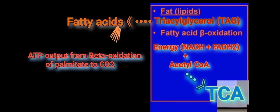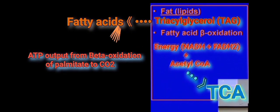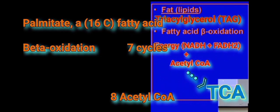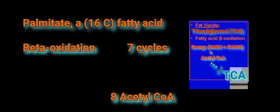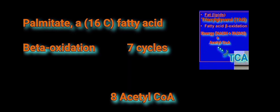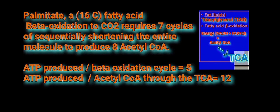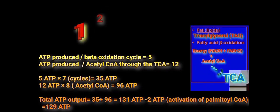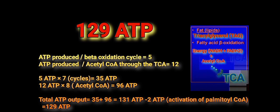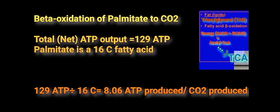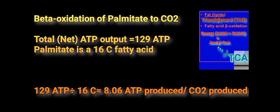Beta oxidation of fatty acids is the major catabolic pathway that produces energy from dietary or stored triacylglycerol. Starting with palmitate, a 16-carbon fatty acid, beta oxidation will sequentially remove two carbons at a time in seven cycles to produce a total of eight acetyl-CoA. The total net ATP output from the complete oxidation of palmitate to CO2 is 129 ATPs, which is equivalent to 8.06 ATPs produced per CO2 produced.